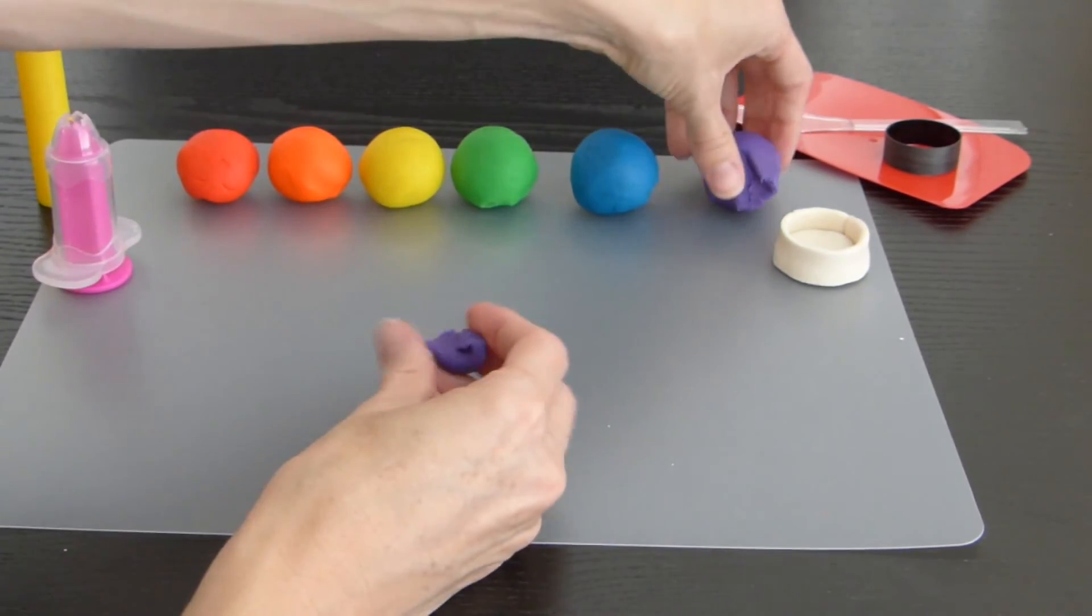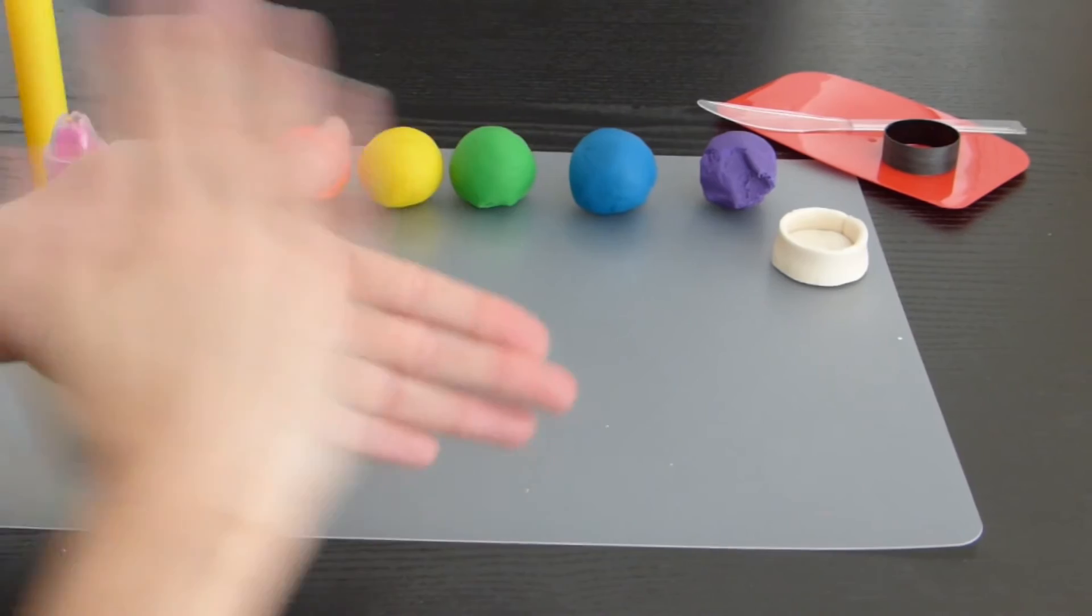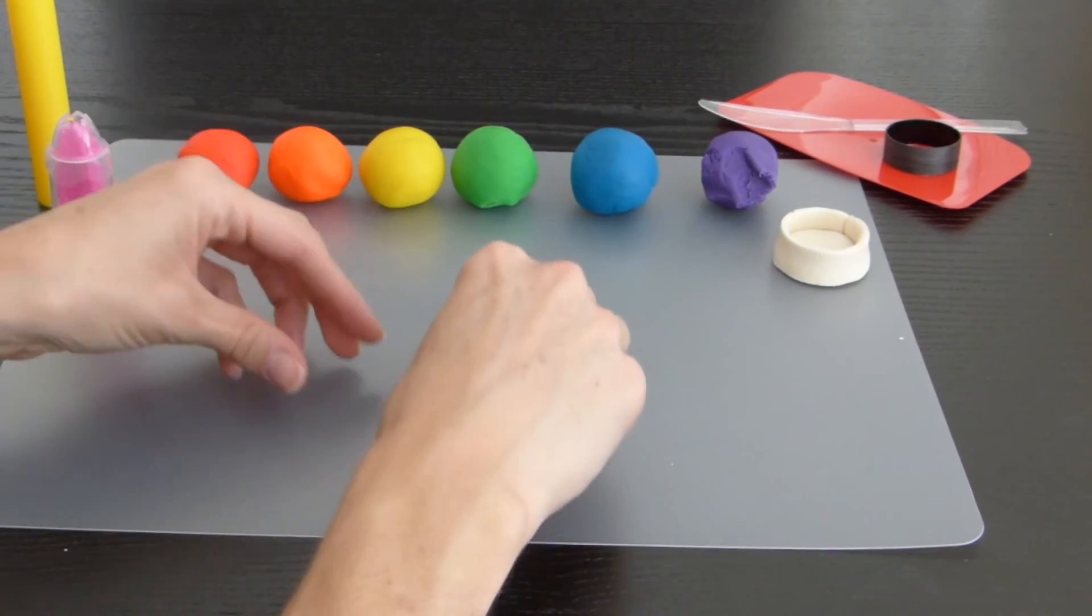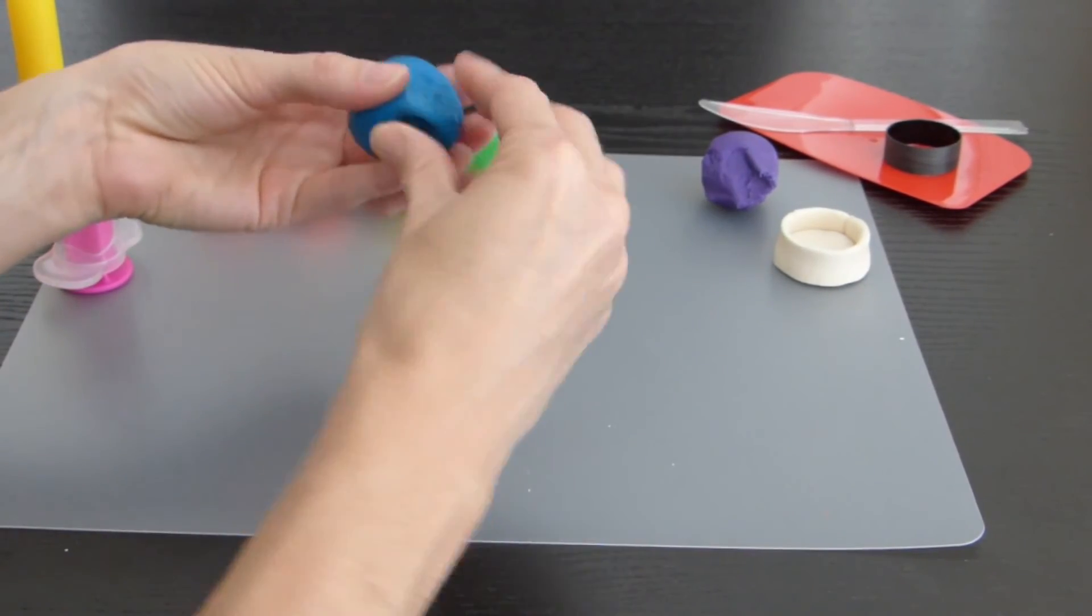Now to make the rainbow ice cream, roll out small balls of red, orange, yellow, green, blue, and purple play-doh.